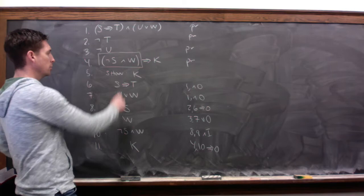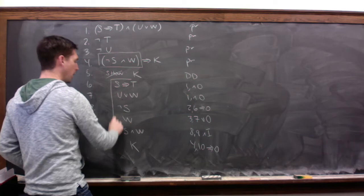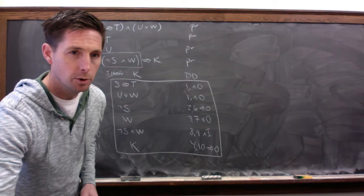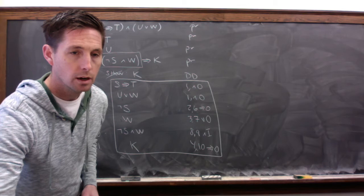And now we've got the antecedent of the conditional, and arrow out tells us we can get K, the consequence. And that comes from line four and ten by arrow out. So now we just have to finish up our proof. We cancel our show line. DD for direct derivation. And then put a box around everything underneath that canceled show line. So there's our second example here. I want to do two more examples before we finish this video off.